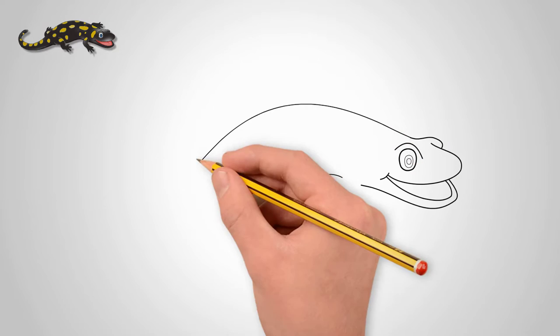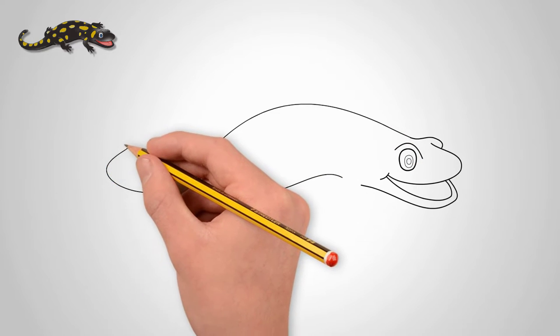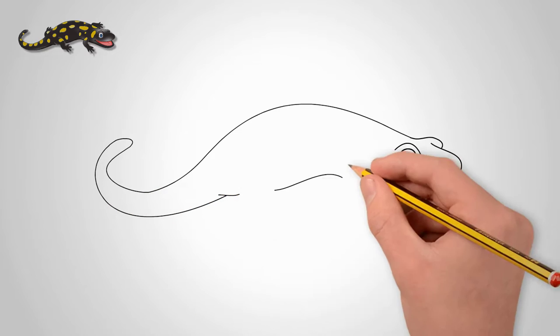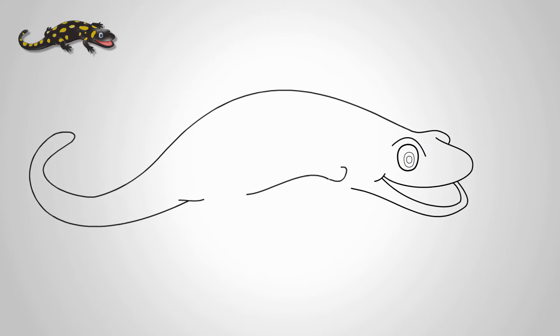Now let's draw the body. First, draw a long rounded line. This will be the upper contour of the lizard's body. Next, draw the lower part of the salamander's body.